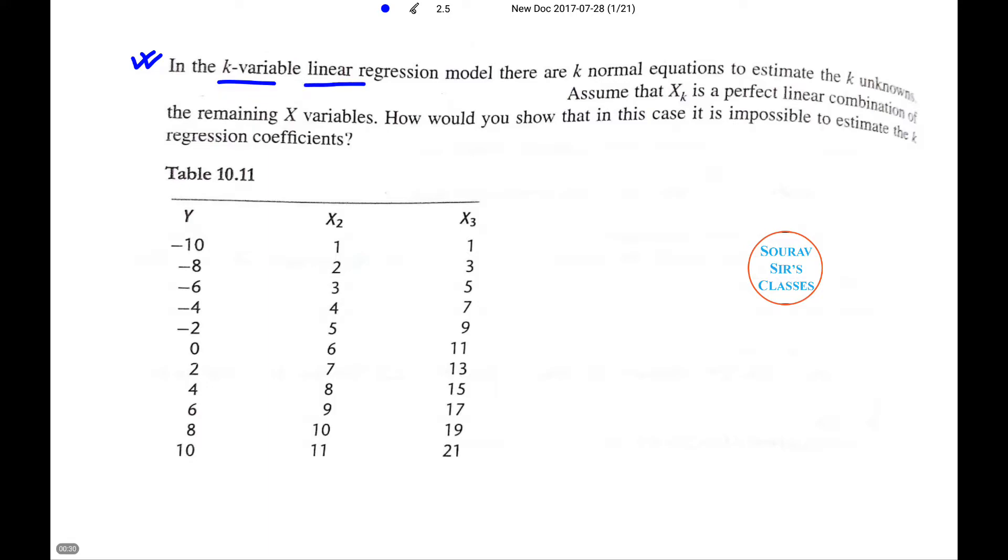...variable linear regression model, there are k normal equations. By linear regression model we mean linear relationship. Then we had normality assumption, the assumption of homoscedasticity, no autocorrelation, no multicollinearity, etc.